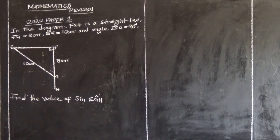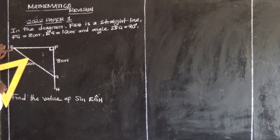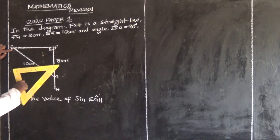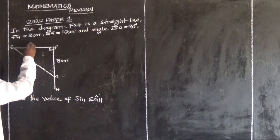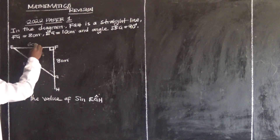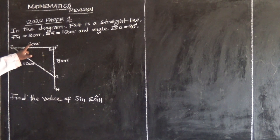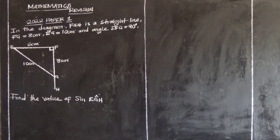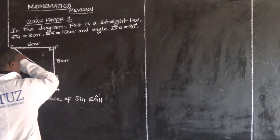Since this is a right-angle triangle, the longest side is the hypotenuse. If the hypotenuse is 10cm and the other side is 8cm, then the remaining side becomes 6cm. So let's find EF — EF is 6cm.